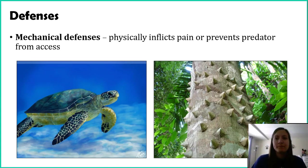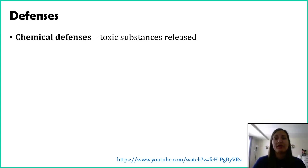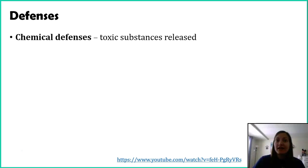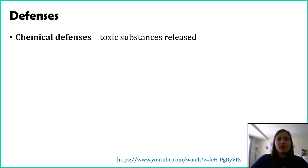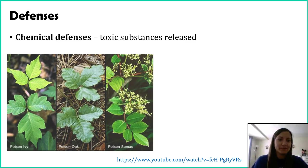A second group of defenses are chemical defenses — toxins that are released particularly when something goes to consume an organism. This is a little different from a snake biting something and injecting venom, because although that is a chemical, that's not really a defense mechanism — that's a hunting mechanism. This is more about something you eat and get sick from. The goal is that you won't eat that organism again.